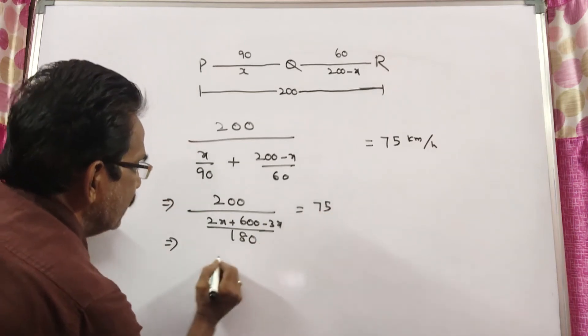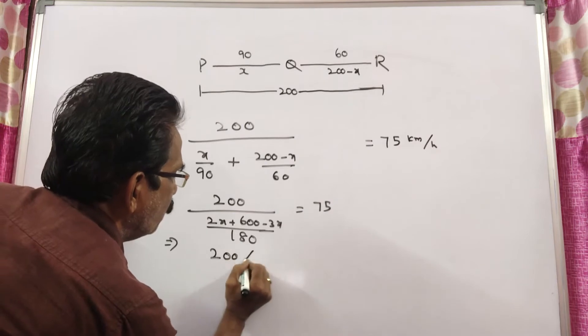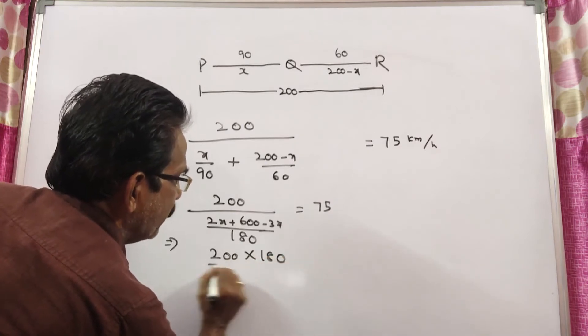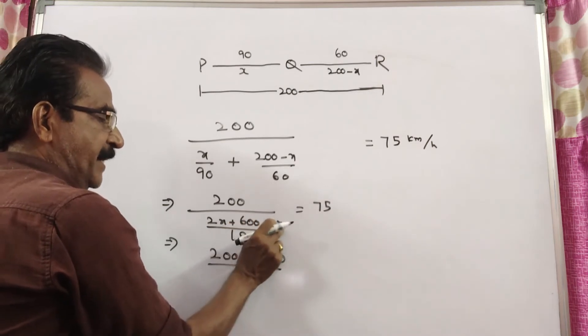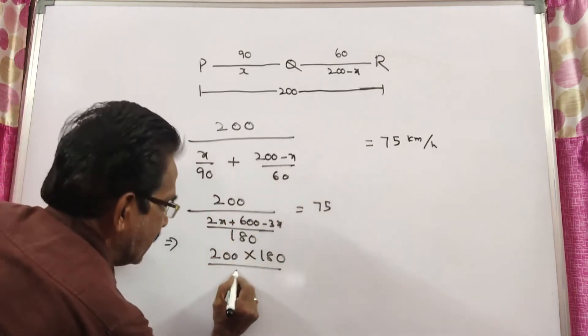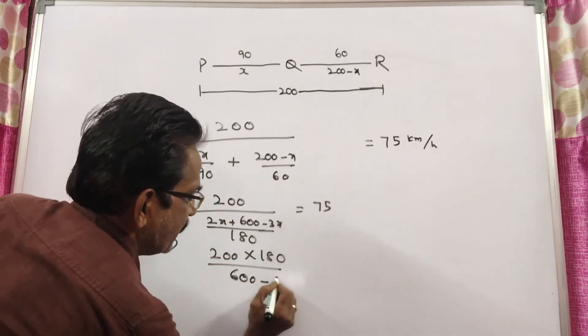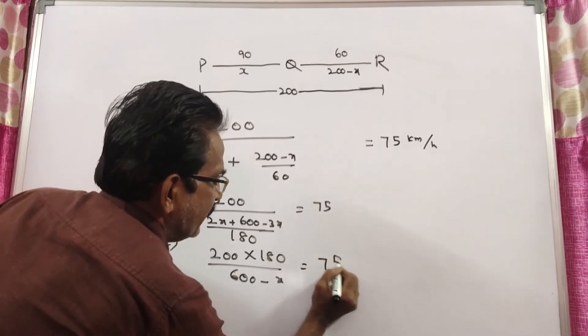This gives 200 times 180 divided by 600 minus x equals 75.